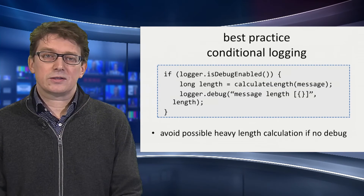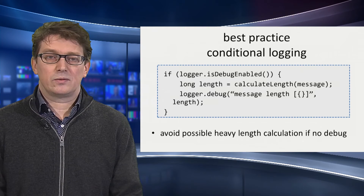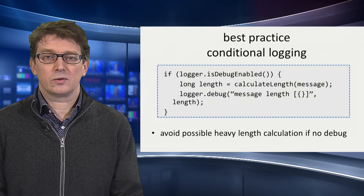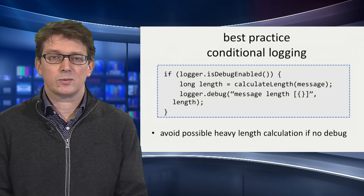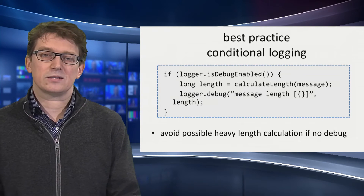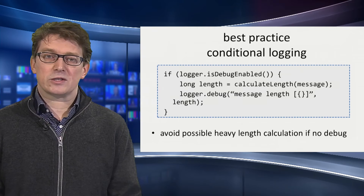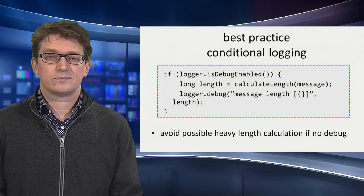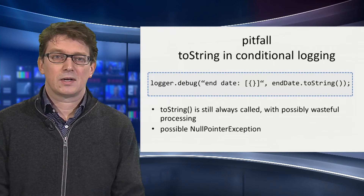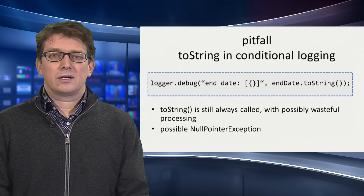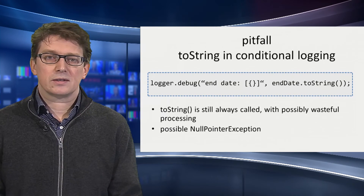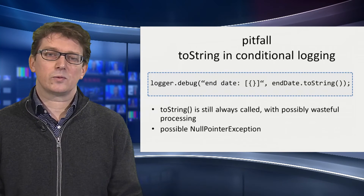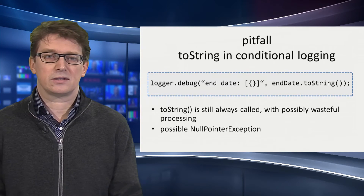Another way to use conditional logging is to ask the logger whether debug level is enabled. If debug is enabled, you can do the calculation needed for your debug statement — in this case, calculate the length of the message, which can be a heavy method. If debug is not enabled, those steps are skipped. If you use the replacement variables, do not call toString(), because that works against the efficiency we just discussed, and you also risk a NullPointerException if the object is null.